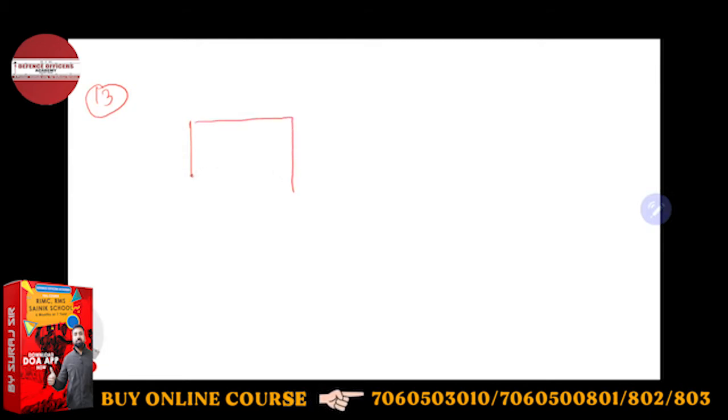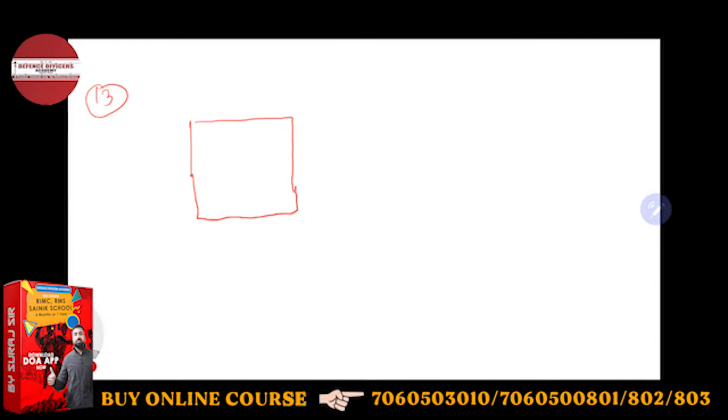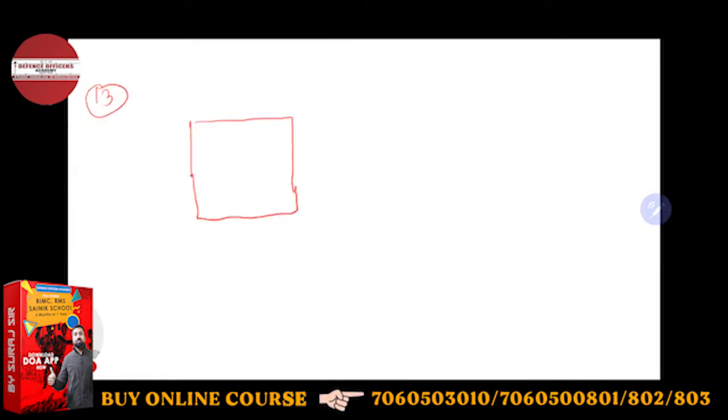Okay, suppose this is a square field. And what is given: a man walking at the rate crosses a square field diagonally, so he diagonally crosses. This is point A, this is point B, so he is covering distance A to B diagonally.